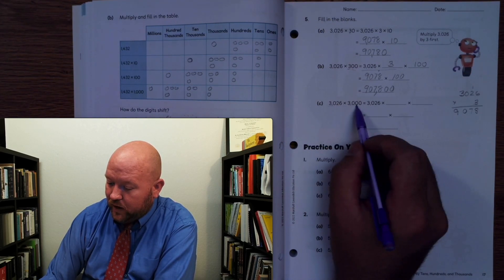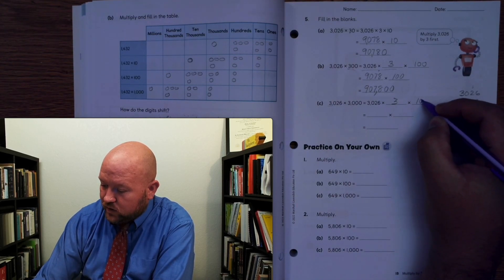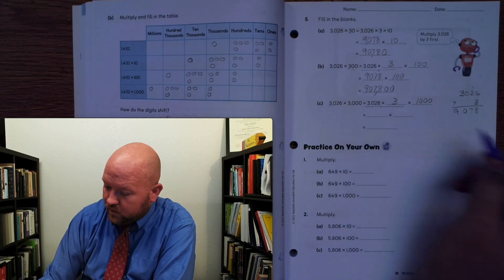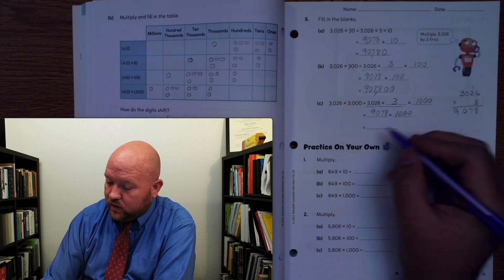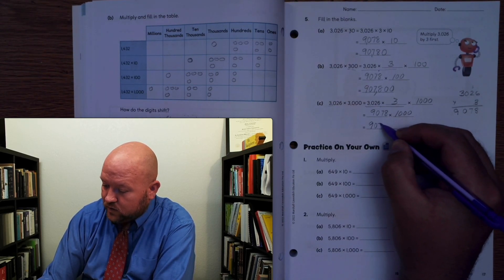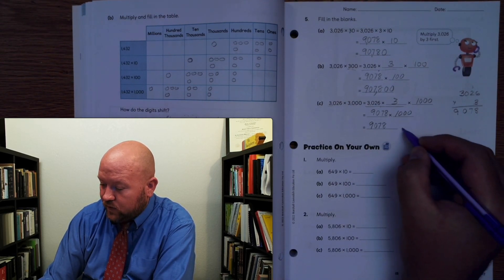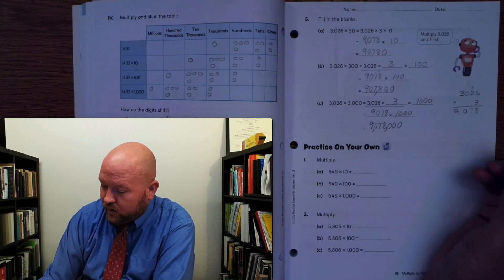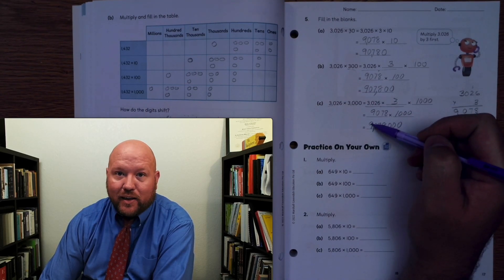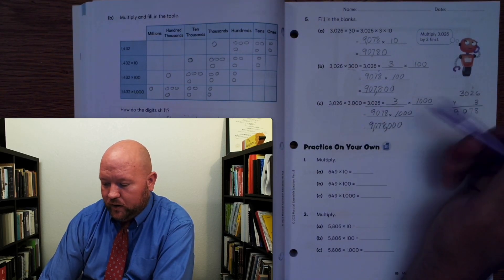But here we're going to multiply by 3,000 — so this is going to be 3 and 1,000. Again, 9, 0, 7, 8 — now we're going to multiply it by 1,000, shifting it over three place values to the left. 9, 0, 7, 8 with three zeros. It went from 900,000 to 9,000,000 — just shifted the place value 1 to the left.